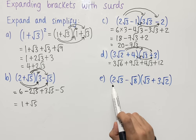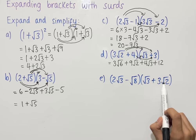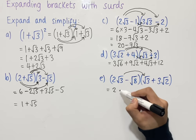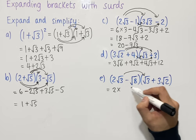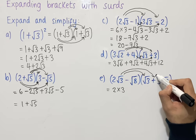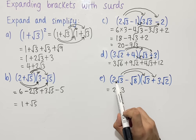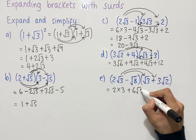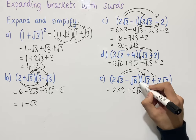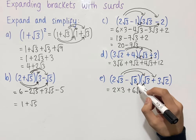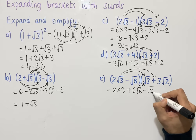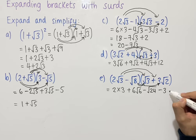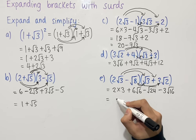The last question is expanding 2 root 3 minus root 8 with root 3 plus 3 root 2. Using FOIL, the first terms give 2 root 3 times root 3, which is 2 times 3 since root 3 times root 3 equals 3. The outside terms give 2 root 3 times 3 root 2: multiplying the fronts gives 6 and root 3 times root 2 gives root 6, so 6 root 6. The inside terms give minus root 8 times root 3, which is minus root 24. Finally, minus root 8 times 3 root 2 gives minus 3 root 16.